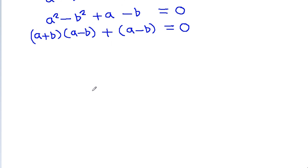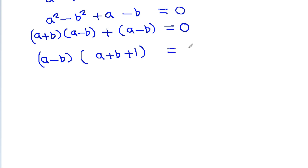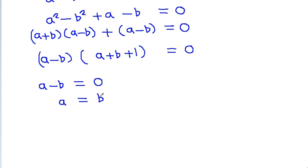Now we can take (a minus b) common, giving us (a minus b)(a plus b plus 1) equals 0. So either a minus b equals 0, which means a is equal to b.